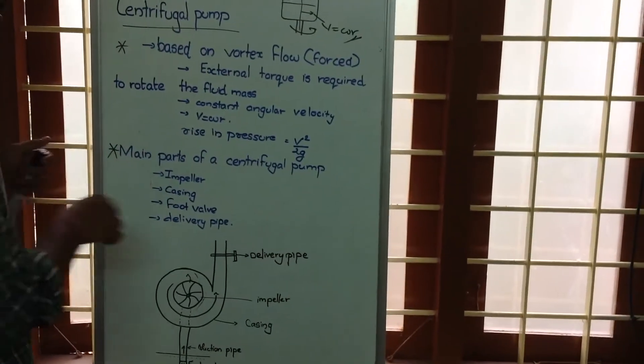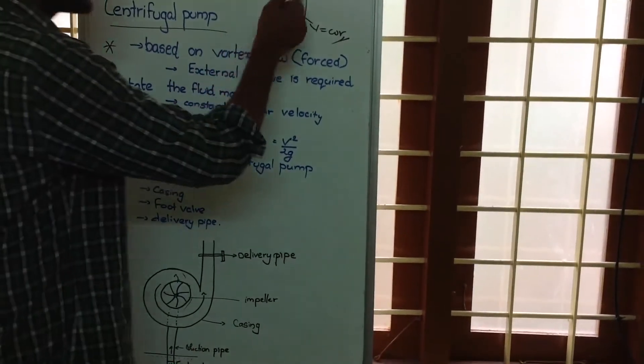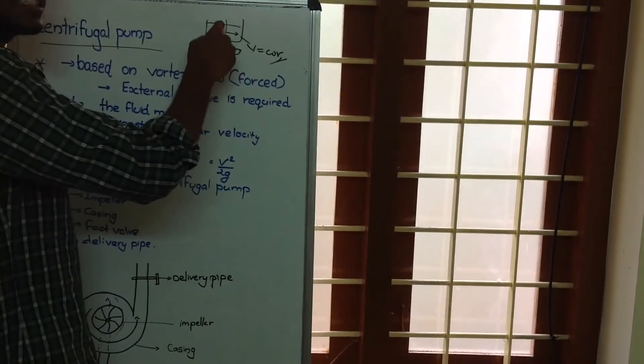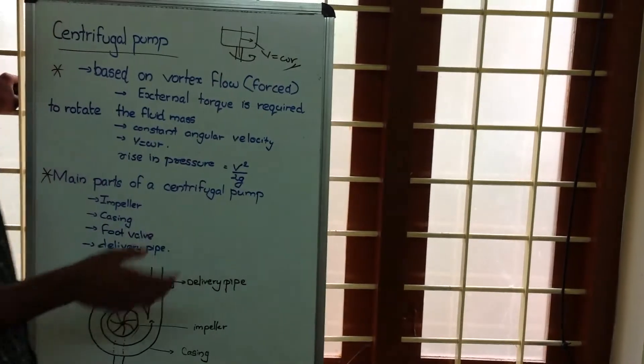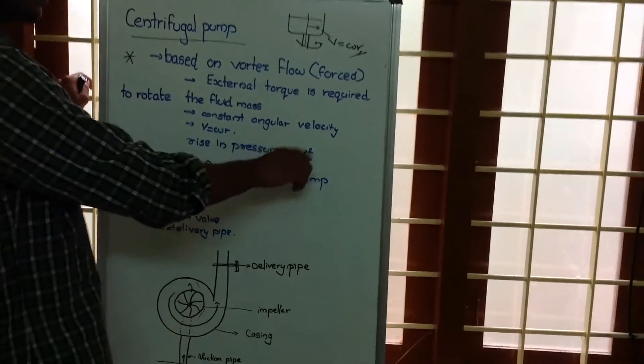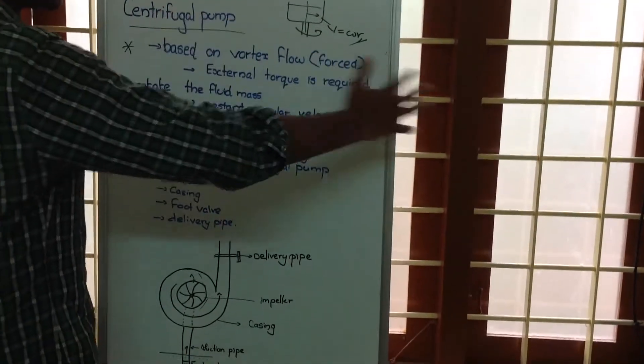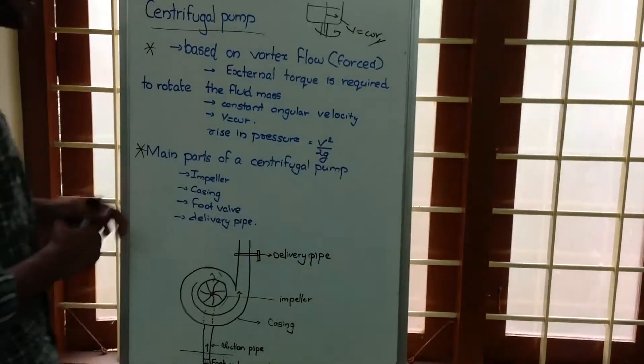Rise in pressure because of this forced vortex flow. As we know that the velocity here is more and here the velocity is less. Because of increase in velocity, there will be a change in pressure and that rise in pressure is v square by 2g. When we are rotating, the pressure towards this side will be more. So that pressure is v square by 2g.